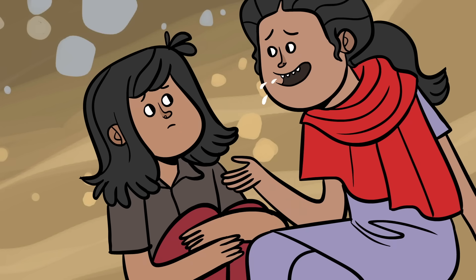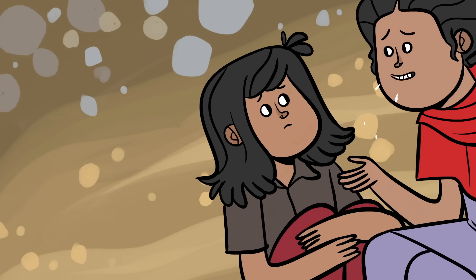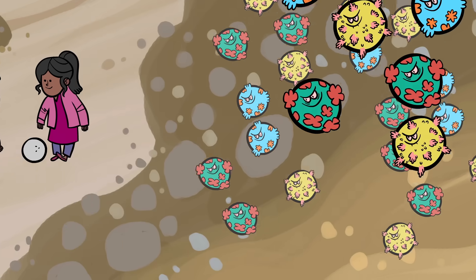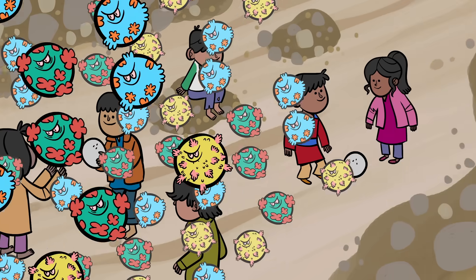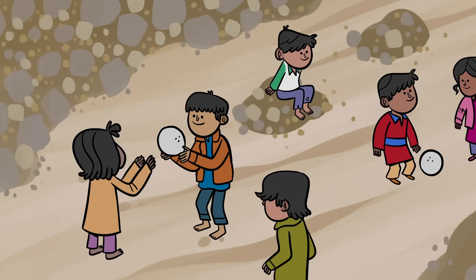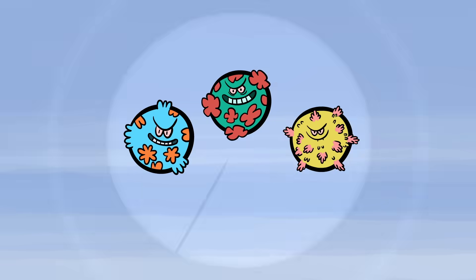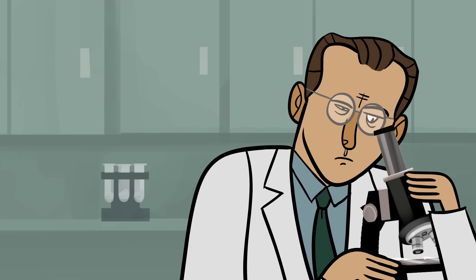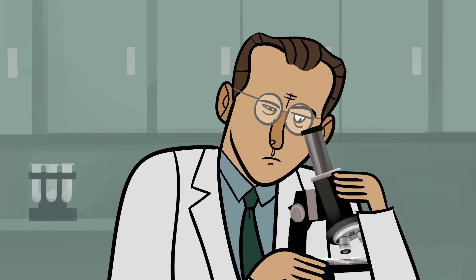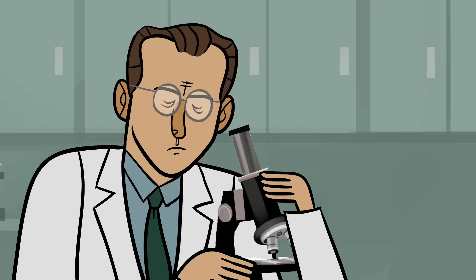And once infected, individuals remain contagious for three to six weeks, spreading a silent outbreak with few trackable symptoms. This is what made polio unstoppable until US physician Jonas Salk found a solution in the early 1950s.